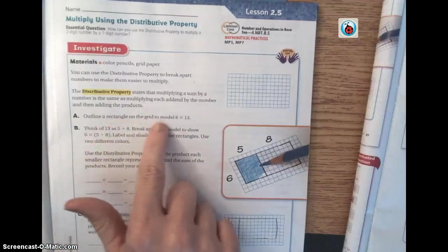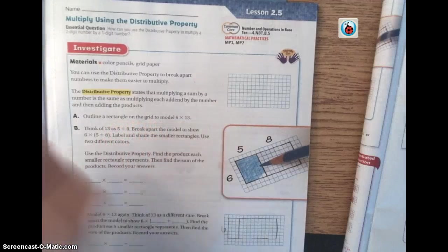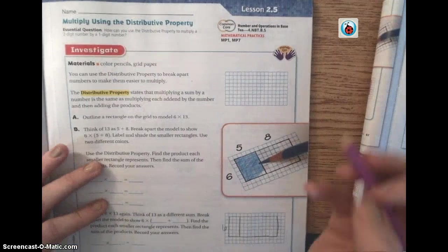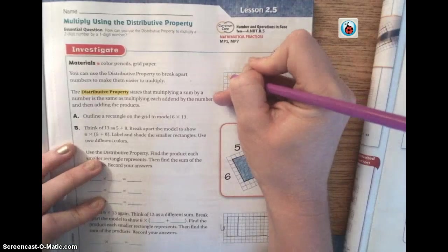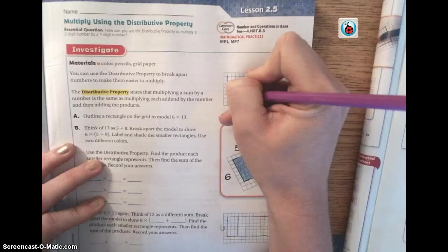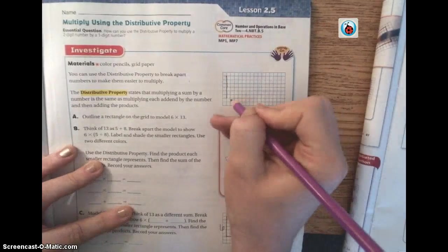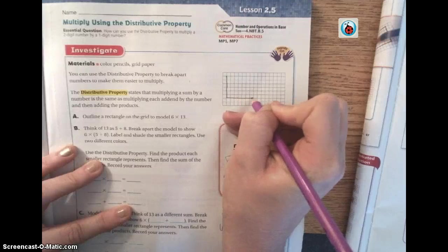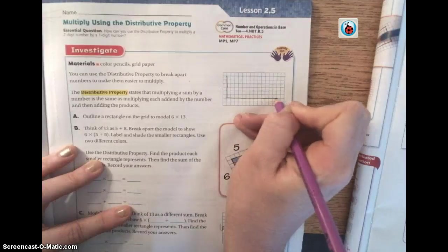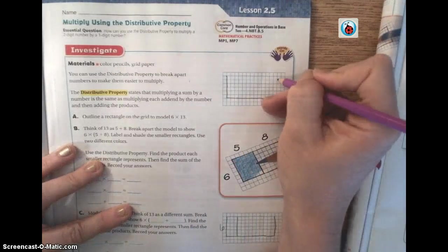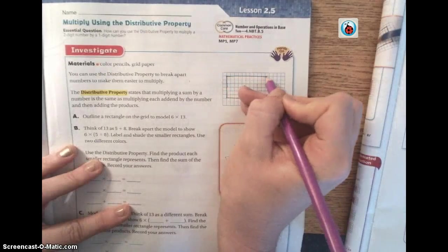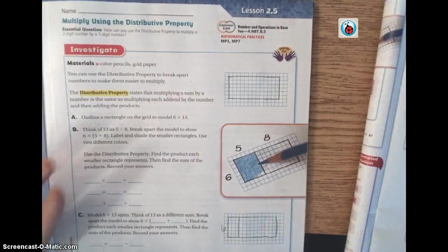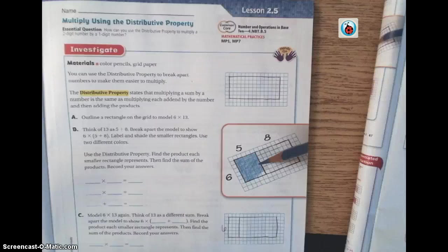A says outline a rectangle on the grid to model 6 times 13. So on the grid, you can kind of look at this one down here as a guide, but right here on this grid, we're going to do 6 boxes down, 1, 2, 3, 4, 5, 6, and then we're going to do 13 boxes over, and then we're just going to close that rectangle. You're making a 6 by 13 rectangle, basically. When you're done, it should look like that.